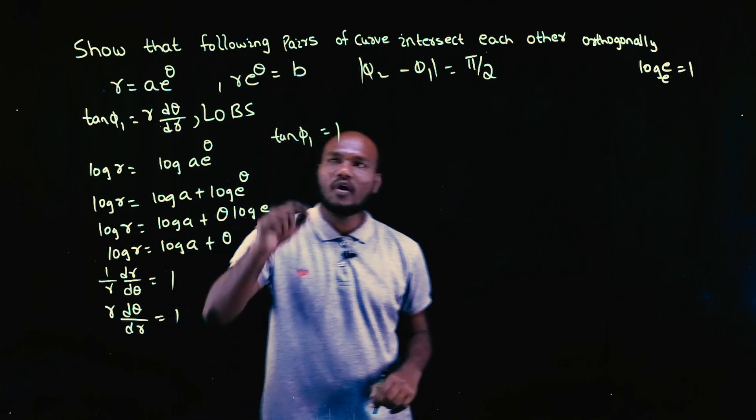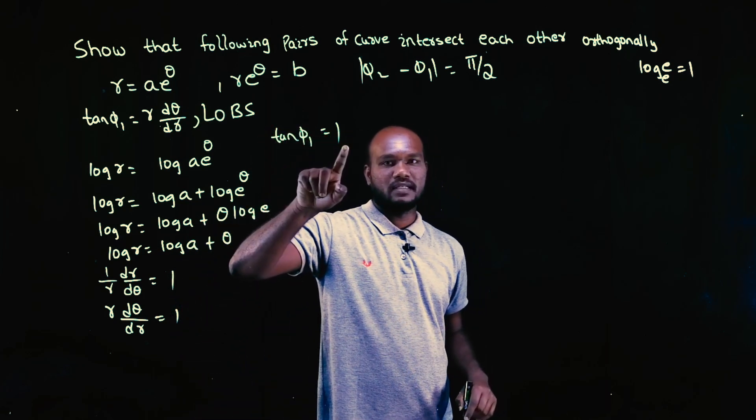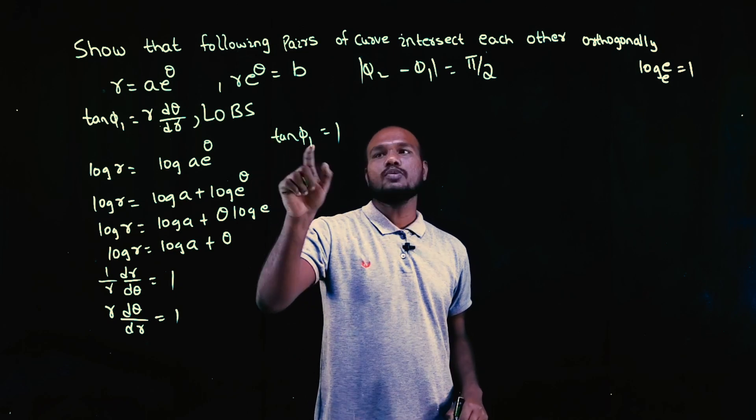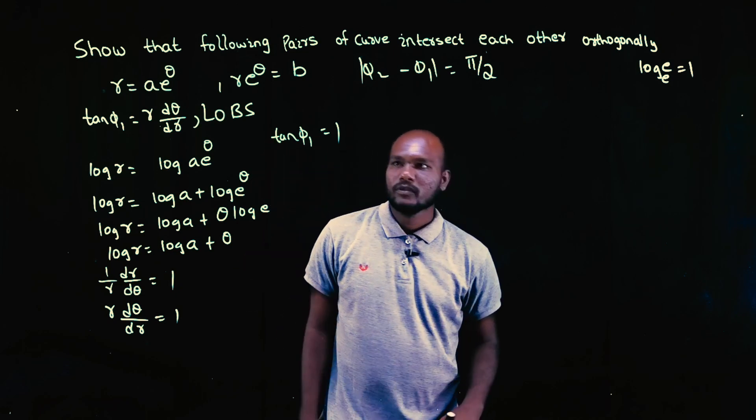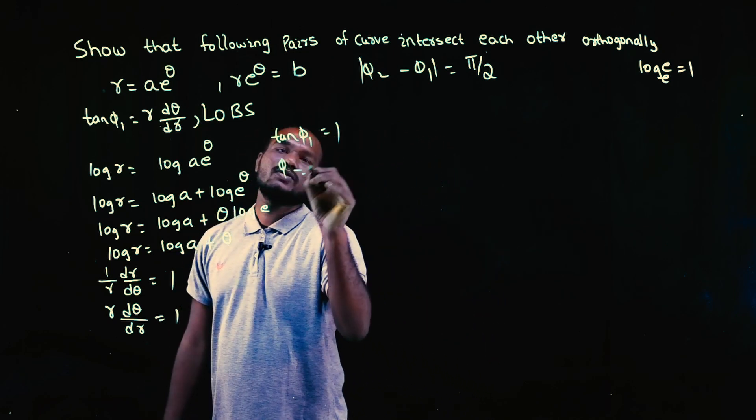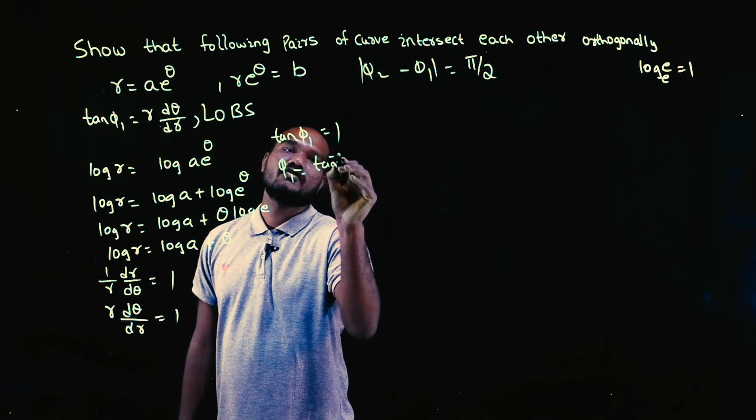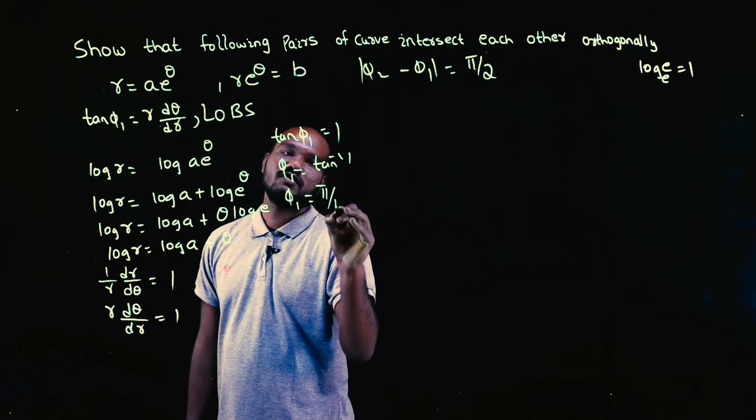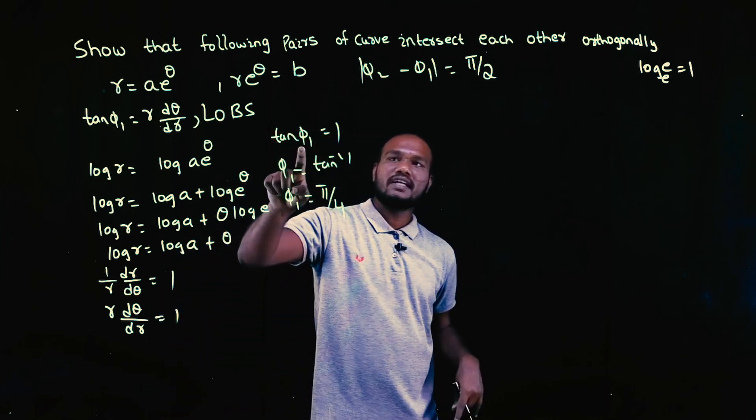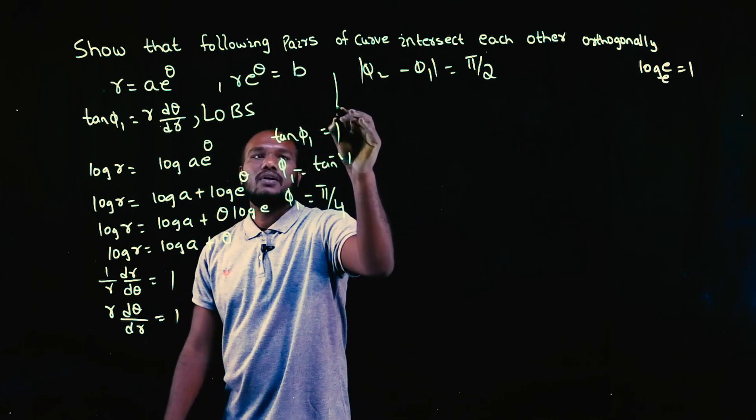When, for what angle of phi 1, will this become 1? How much should be phi 1 value? This will become 1, so phi 1 is equal to tan inverse of 1. What is tan inverse of 1? Pi by 4, 45 degrees. For 45 degrees this will become 1, right?